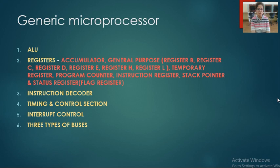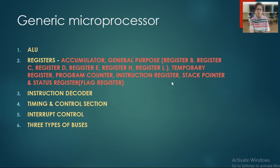Next is instruction register. Instruction register is used to store the instructions. Whatever instructions we give to the computer, it stores them in the instruction register and then analyzes them. This is how the computer performs according to our instructions — it stores the instruction in the instruction register and then decodes and analyzes it.